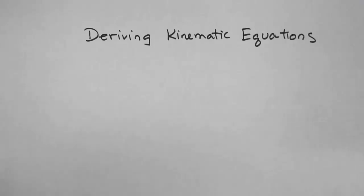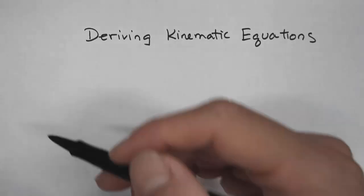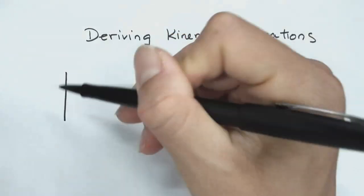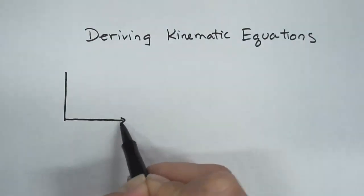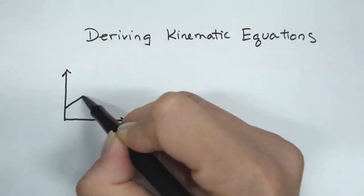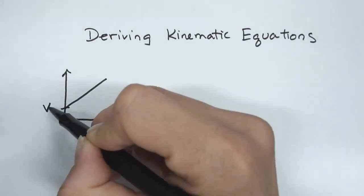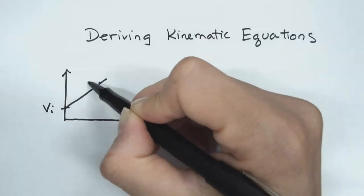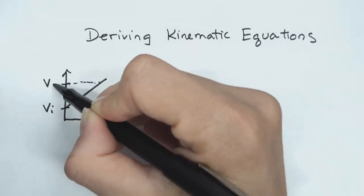In this video I'm going to be deriving the kinematic equations. I'm going to start off with a velocity graph. It has an initial velocity and then at some point later it's got a final velocity.